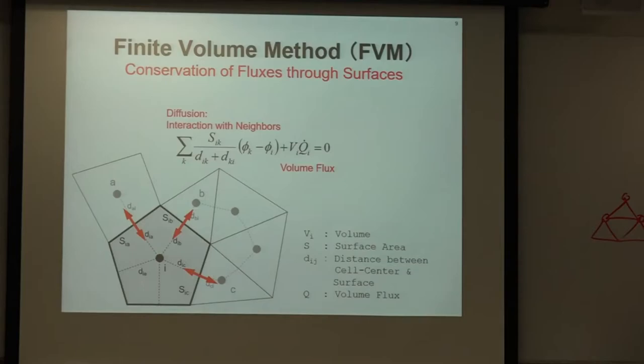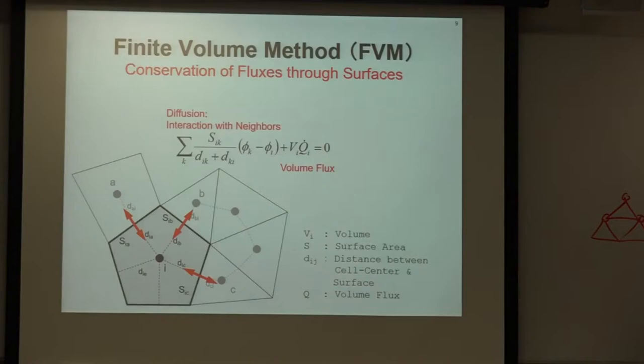This is a fundamental aspect of the finite volume method: conservation of fluxes through surfaces. The governing equation has two parts — the first part represents diffusion (interaction with neighbors), and the second part represents volume flux. Here, phi is the potential value, S is a surface, D is the distance between cell centers, V is the volume of the finite volume cell, and Q (or Q-dot) is the volume flux.